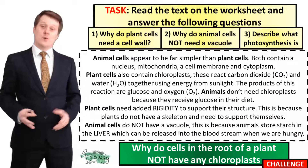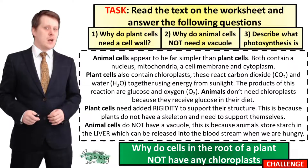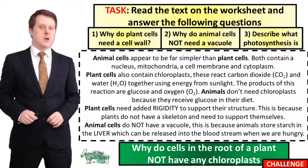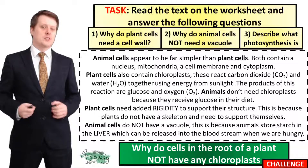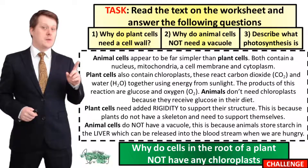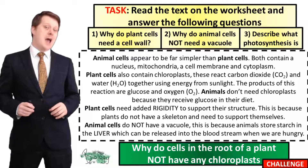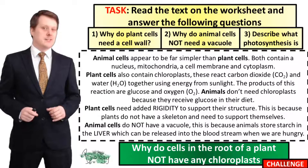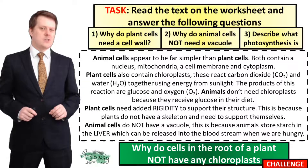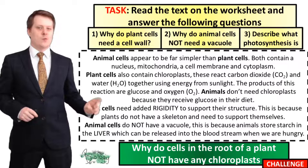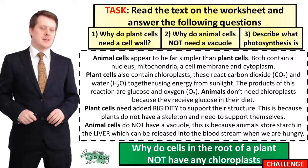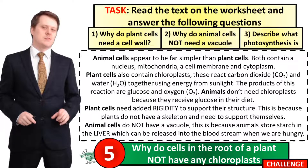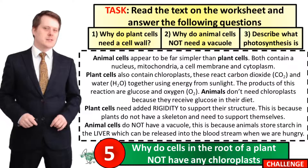For our next task, I'd like you to read the text on the worksheet and use that information to answer the following questions: why do plant cells need a cell wall; why do animal cells not have a vacuole; and describe what photosynthesis is. And if you still want a challenge, I would also like to know why do cells in the root of a plant not have any chloroplasts. I'm going to put five seconds on the clock and if you need more time pause the video.